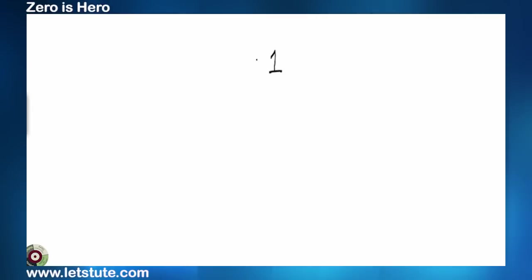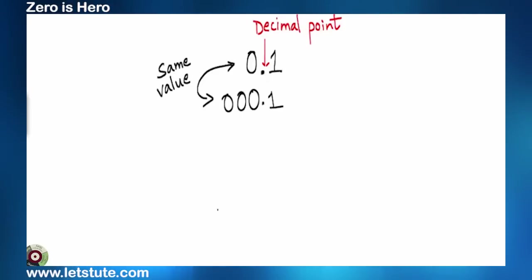But you know what? This left side zero may affect the number when we deal with decimals. Yes, if we add zero to the left side of this zero, the number will remain unchanged. And same happens when we add zero to the right of one.